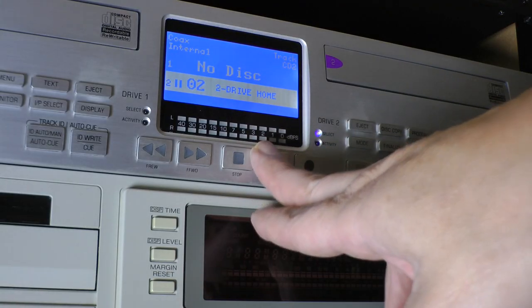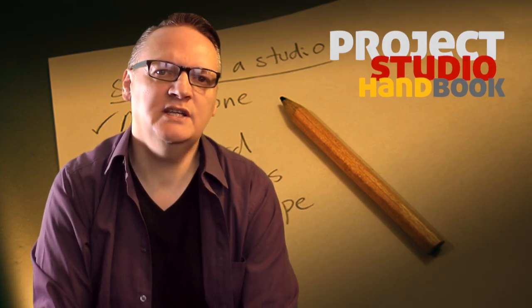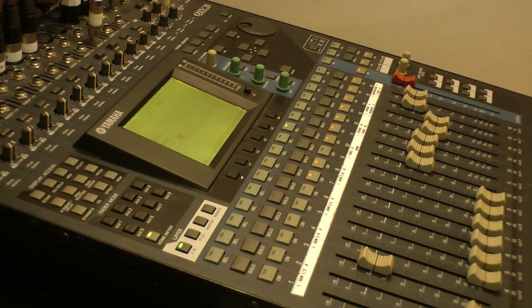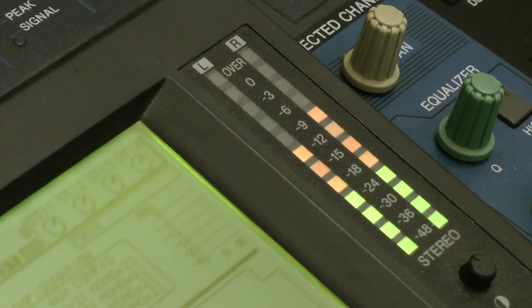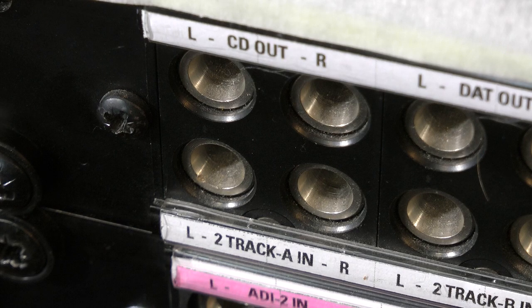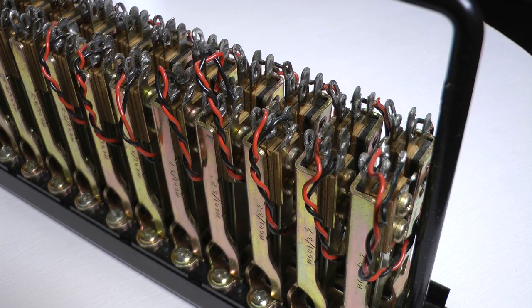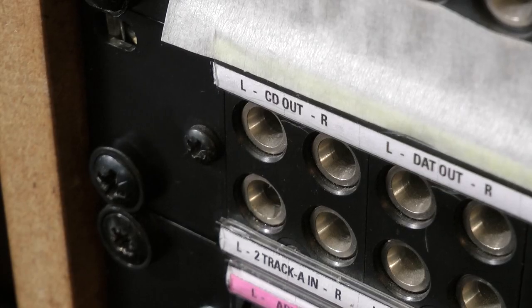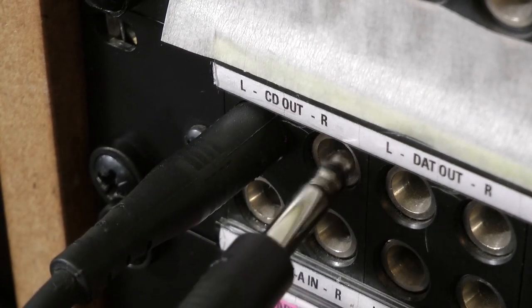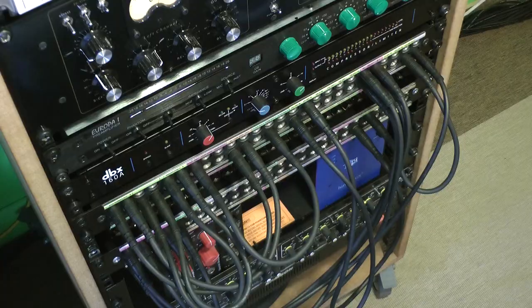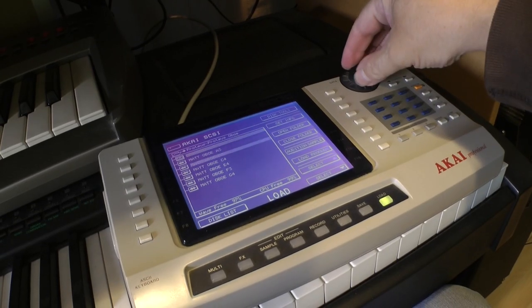An example would be to have the outputs of a CD player connected to two sockets in an upper row and the inputs to a mixer's two-track monitor return connected to two sockets in the row below, and have these connections normalized so that the devices are permanently connected. The connection would only be broken when patch leads are inserted into the top row sockets, perhaps in order to send the CD player output to a sampler.